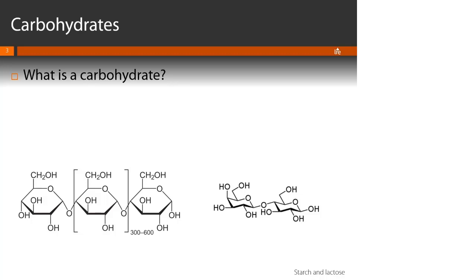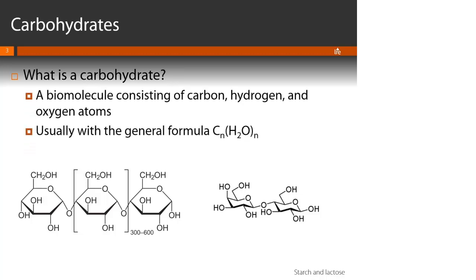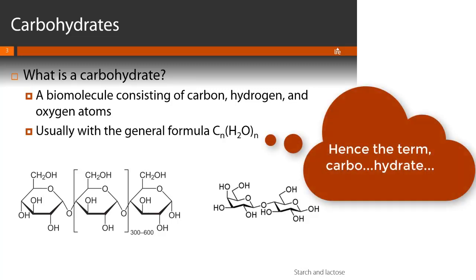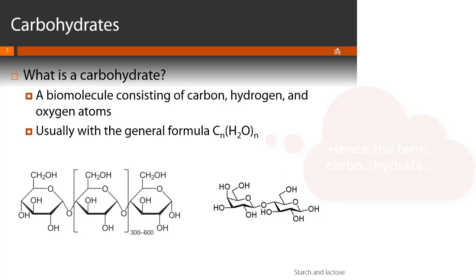From a chemistry standpoint, a carbohydrate is a biomolecule consisting of carbon, hydrogen, and oxygen atoms, usually with the general formula CₙH₂ₙOₙ. So most carbohydrates are going to have a 1:2:1 ratio of carbon to hydrogen to oxygen. Let's see if that's true.